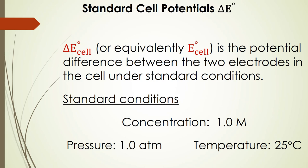Let's talk about standard cell potentials first. You'll see this represented as ΔE°cell, sometimes just ΔE°, or equivalently E°cell without the delta. What it represents is the potential difference between the two electrodes in the cell under standard conditions. Standard conditions are represented with this naught symbol: for all aqueous solutions, the concentration would be 1 molar; if a gas is being bubbled through the solution, the pressure would be 1 atmosphere; and generally, the temperature is 25°C.